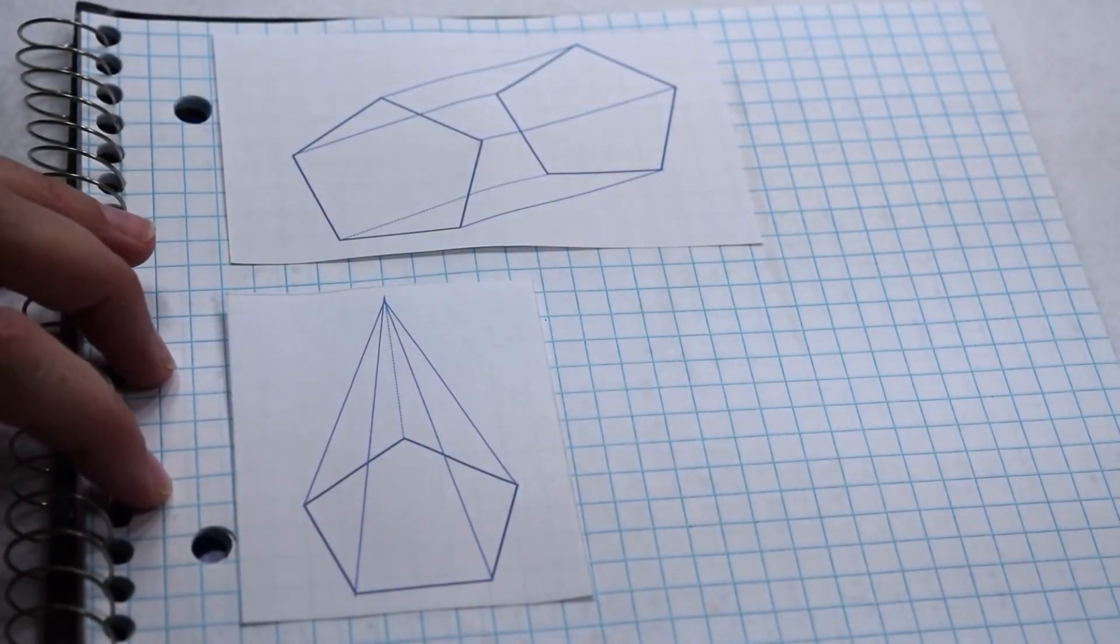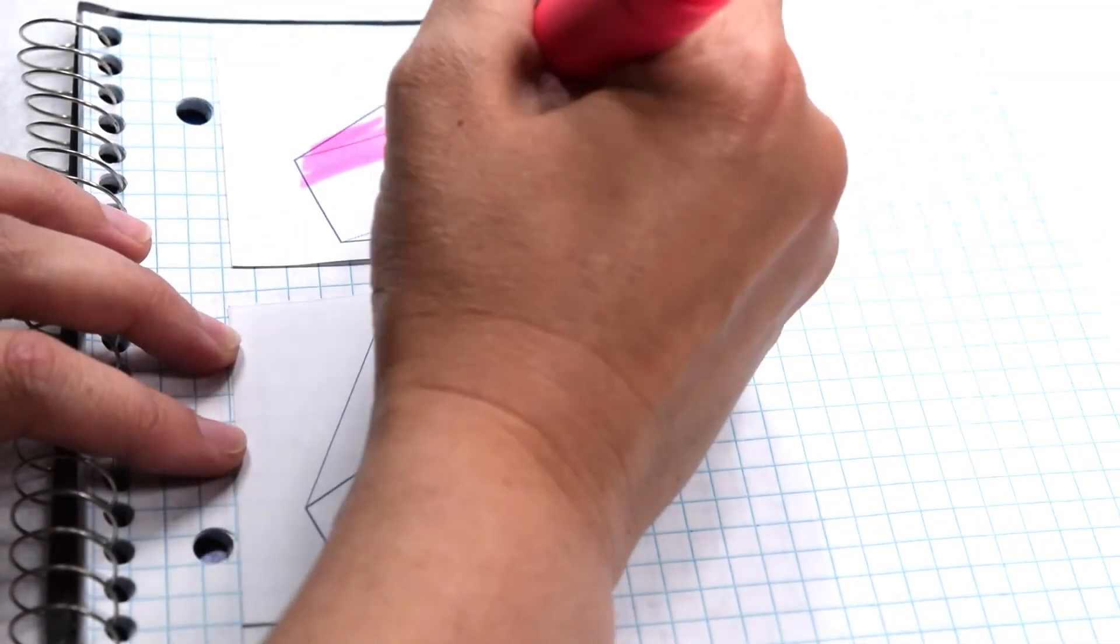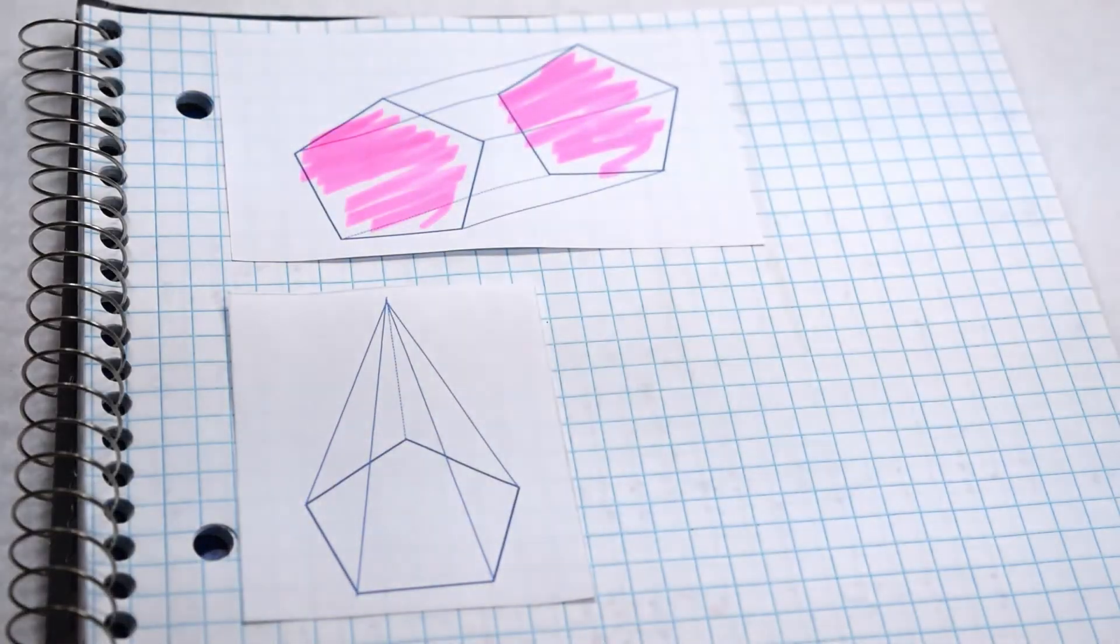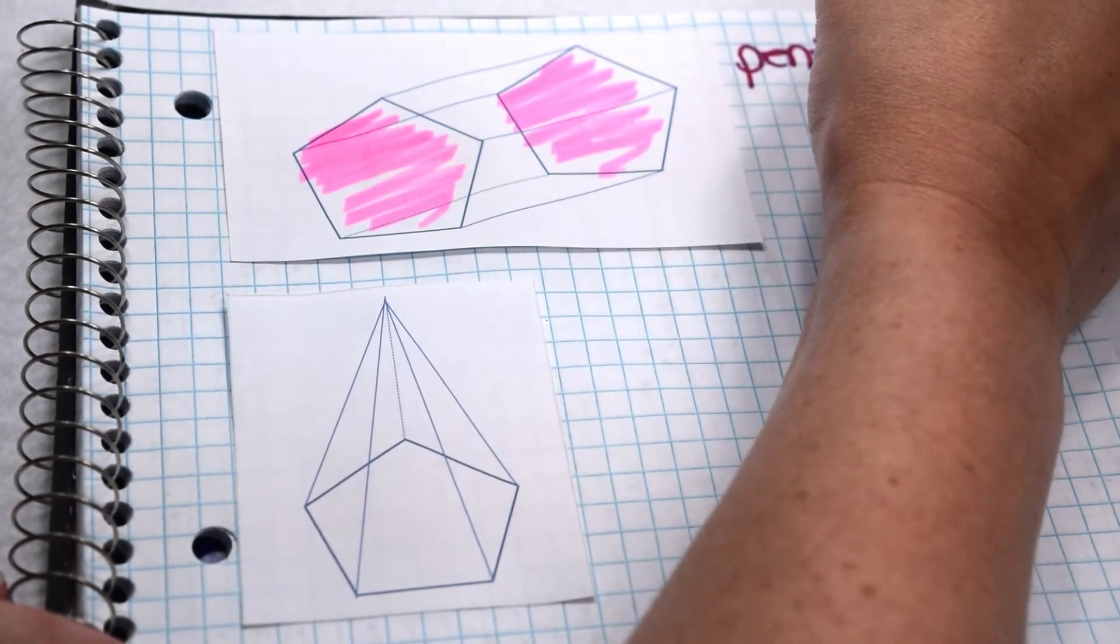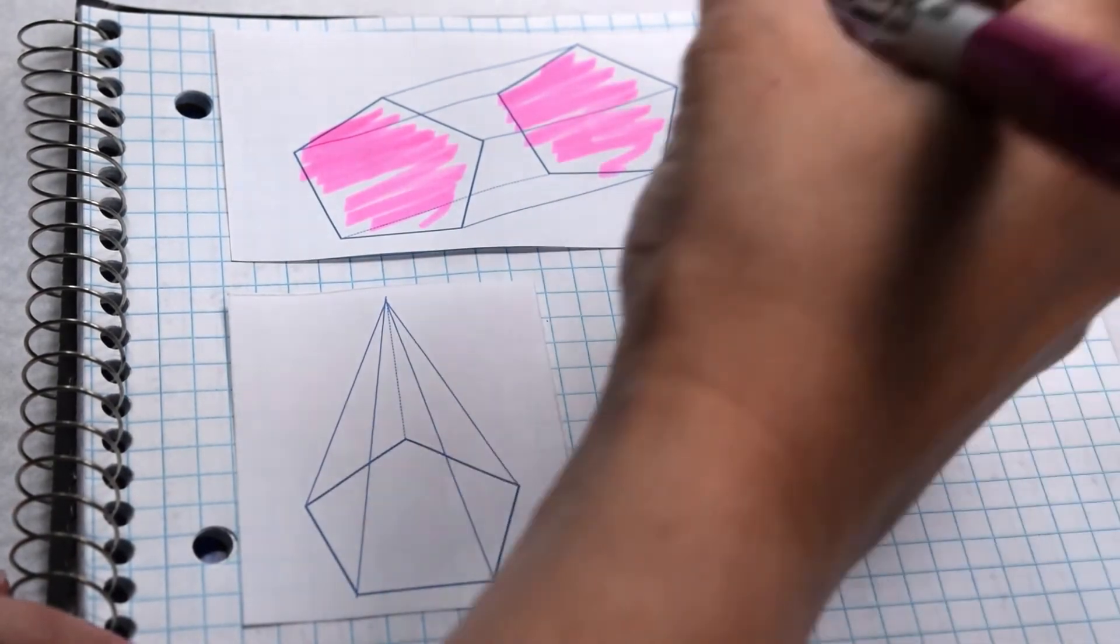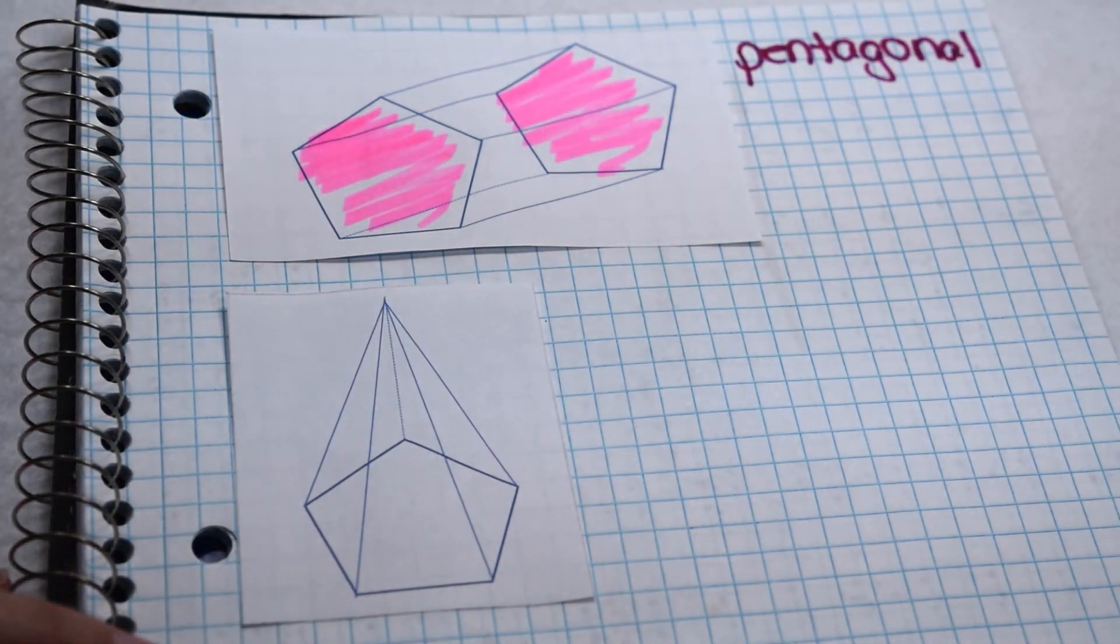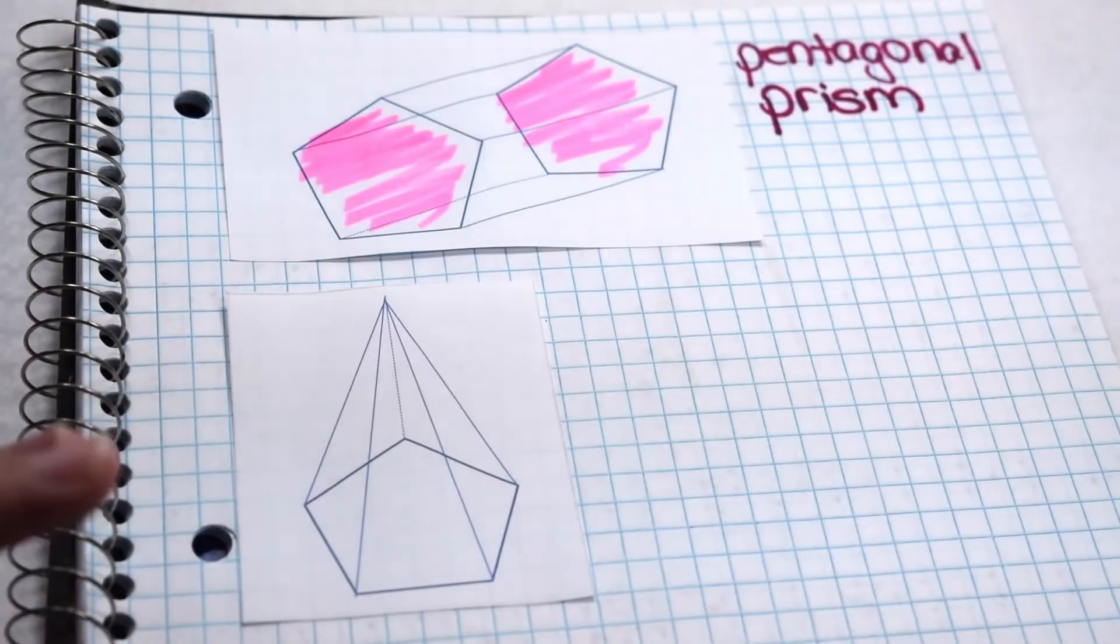Even when we have a two-dimensional representation of a 3D object, we can still name it based on its bases and its lateral faces. In this first one, we can see that we have two faces that are pentagons. That tells me that those must be my bases, so we know this is going to be a pentagonal something. When we look to see what's connecting those bases, we can see that they're connected by rectangles. So we have rectangular lateral faces telling us that this is a prism. So put it together, and this figure is a pentagonal prism.